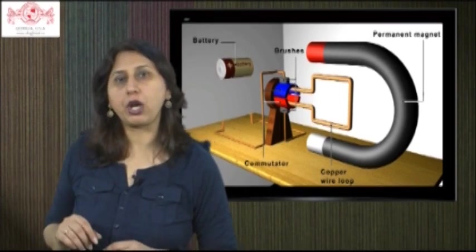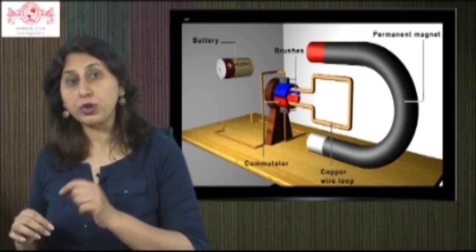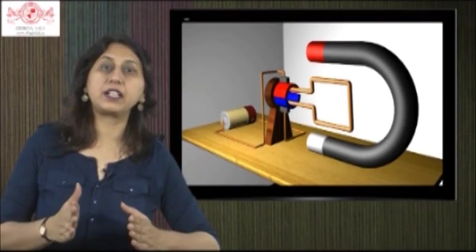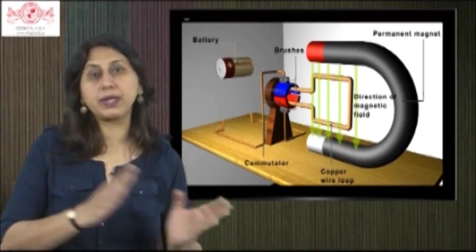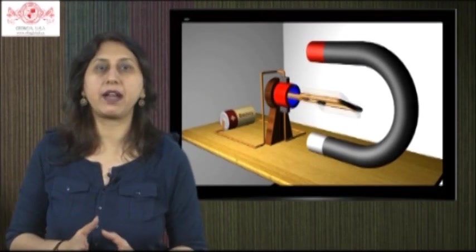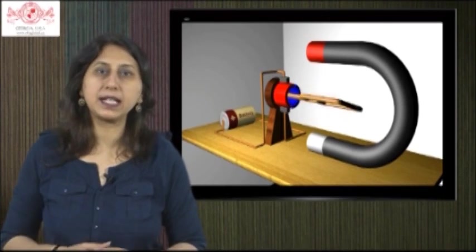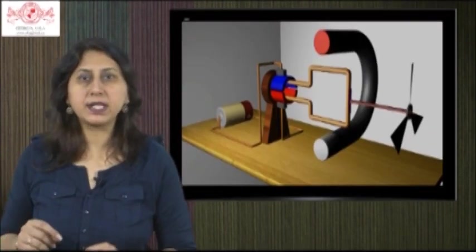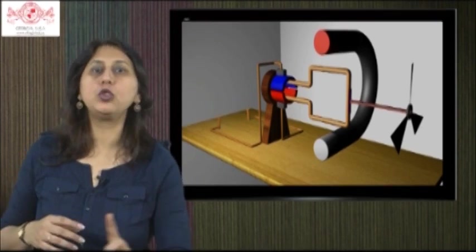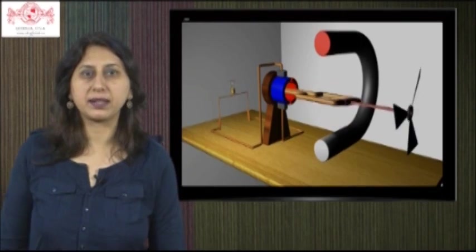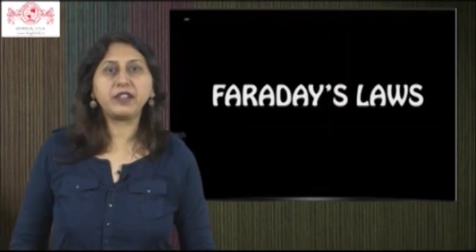An electric generator is a device that converts mechanical energy to electrical energy. A generator forces electric current to flow through an external circuit. In an electric generator, mechanical force is used to rotate the loop in the magnetic field and it produces electric current.